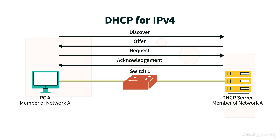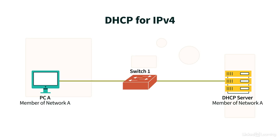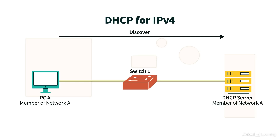Consider this topology we see on screen. PCA just now booted up and needs IP address information — specifically, an IPv4 address. But PCA doesn't know the IP address of the DHCP server that's going to give it that information, so it sends out a Discover broadcast. A broadcast goes everywhere within a subnet but does not cross a router. In this case, there's no router separating PCA from the DHCP server. The D in Dora reminds us of the D in Discover, which is the name of the broadcast PCA sends out asking if there is a DHCP server on the network.